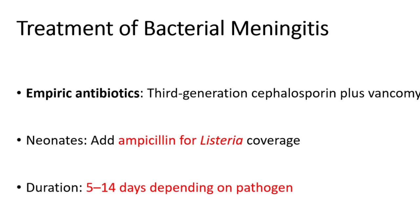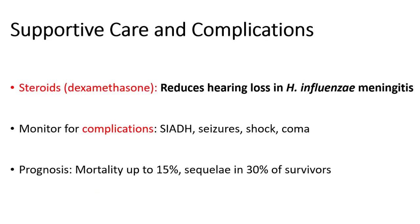Supportive care is crucial in managing children with meningitis. In some cases, corticosteroids like dexamethasone may be administered, particularly in Haemophilus influenzae type B meningitis, to reduce the risk of hearing loss, which is a common complication. Continuous monitoring is necessary to manage complications like seizures, which occur in up to 30% of cases. Syndrome of inappropriate antidiuretic hormone secretion can lead to low sodium levels and requires fluid management. Other severe complications include shock and coma. Despite aggressive treatment, bacterial meningitis has a significant mortality rate of around 10 to 15%, and up to 30% of survivors may suffer long-term effects such as hearing loss, seizures, and cognitive delays.